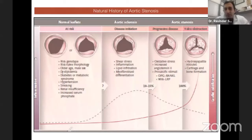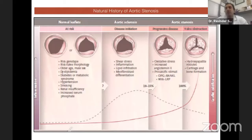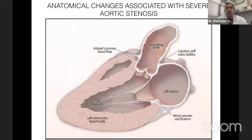What is the natural history of aortic stenosis? Patients with risk factors such as risk genotype, risk valve morphology, older age, male sex, dyslipidemia, diabetes, hypertension, smoking, CKD, and increased serum phosphates — through shear stress, inflammation, lipid infiltration, and myofibroblast differentiation — develop mild aortic stenosis or aortic sclerosis. About 10 to 15% of those develop progressive disease, and 100% of those will go on to develop severe aortic stenosis over one to two decades. If you see a patient with mild aortic stenosis, you must keep following that patient.